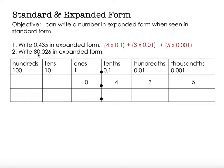Okay, we're going to do the same thing with 80 and 26 thousandths. So I'm going to put that in my place value chart. So I have an 8 in the tens place, a 0 in the ones place, a 0 in the tenths place, a 2 in the hundredths place, and a 6 in the thousandths place.